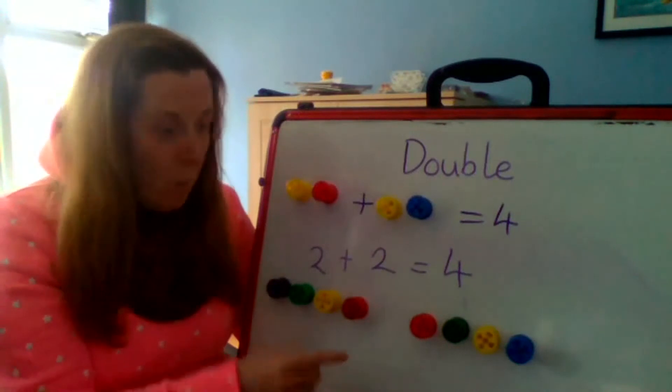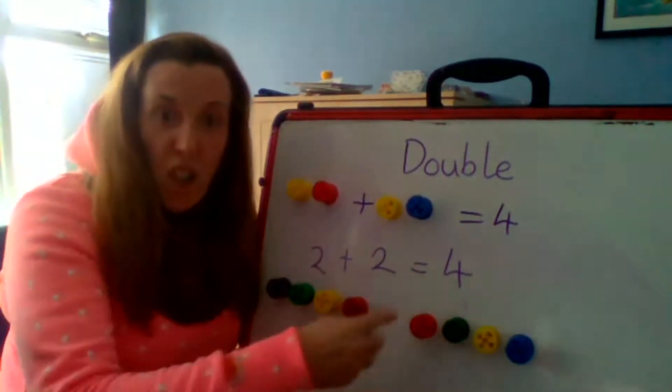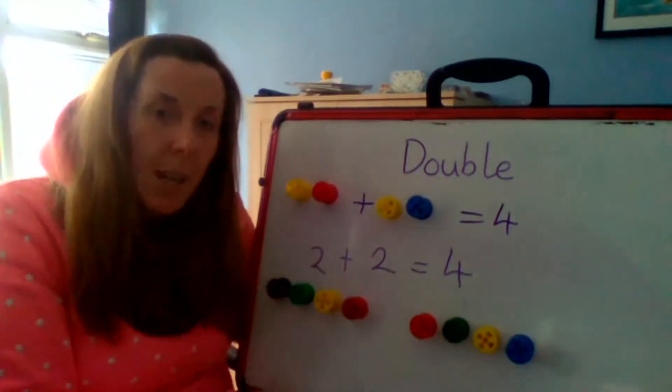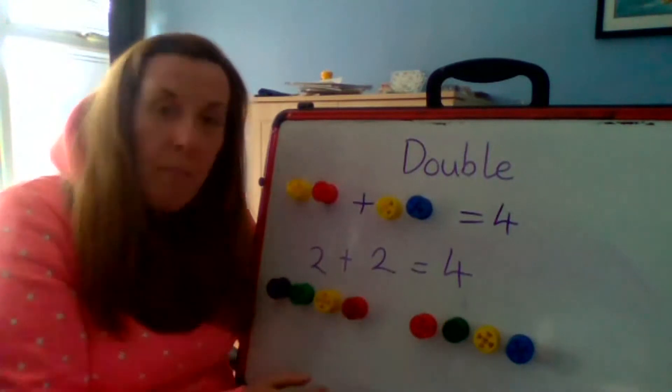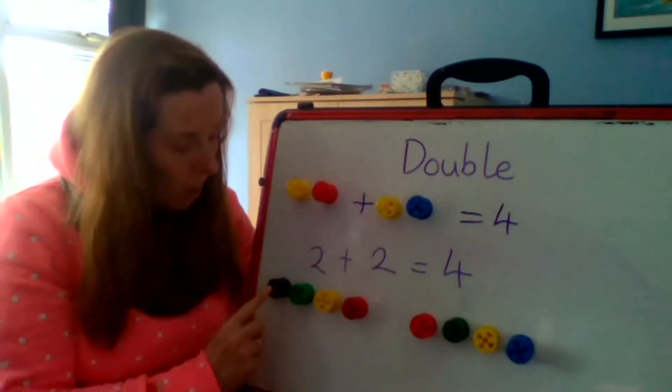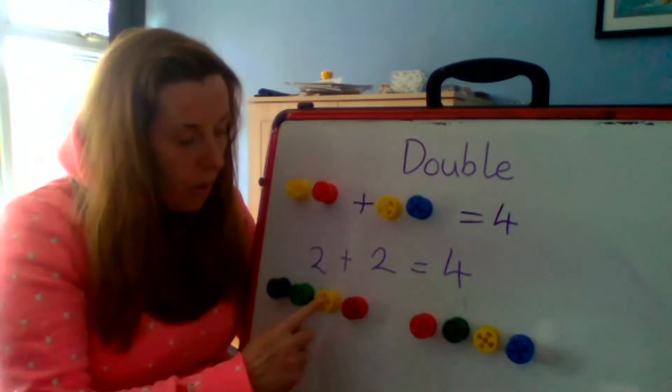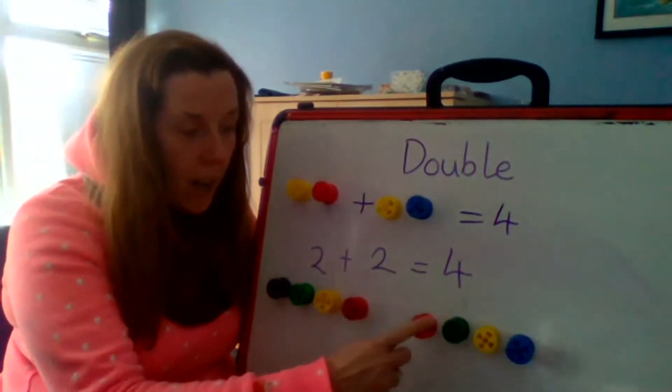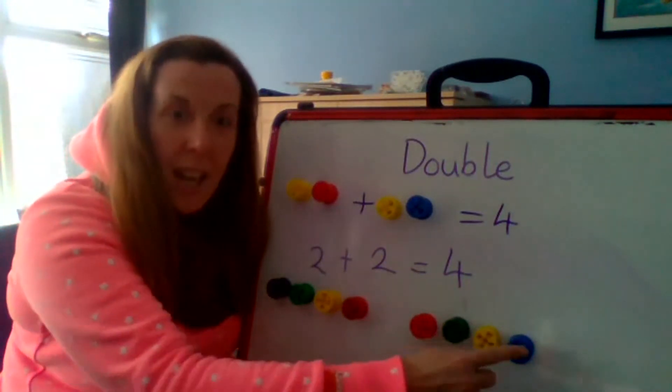So we've doubled it now. We've got a four and we've got another four. So two numbers that are the same. So four add four or double four is how many? Shall we count? One, two, three, four, five, six, seven, eight.